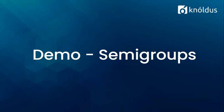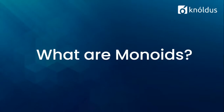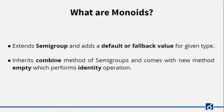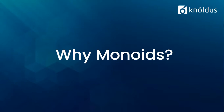Now let's come to the other main part of this session — Monoids. A Monoid extends Semigroup and adds a default or fallback value for a given type. It allows us to combine empty data types so long as we have a Monoid instance. The Monoid type class comes with two methods: the combine method inherited from Semigroup, and its own empty method that performs the identity operation. The question arises — why do we need Monoids? We have two strong reasons.